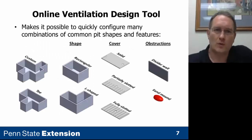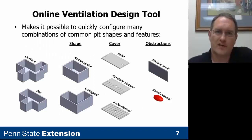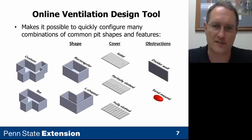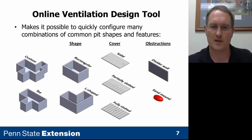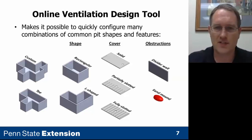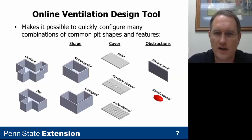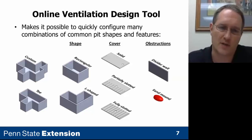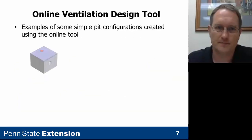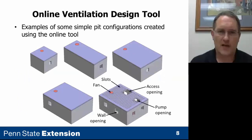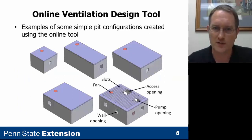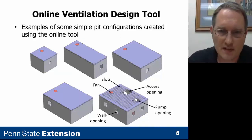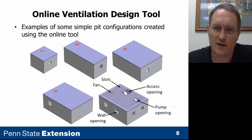The online tool makes it possible to quickly configure lots of different manure pit configurations. There's a typical rectangular tank, but you can also do L-shaped, T-shaped, or custom shapes. The covers can be slotted or solid. We can put in divider walls and also put in obstructions such as sand mounds that commonly occur if sand bedding is used in a dairy barn. This slide shows some common simple pit configurations with different lengths and widths and different combinations of outlet openings in walls or access openings in the top of the cover.